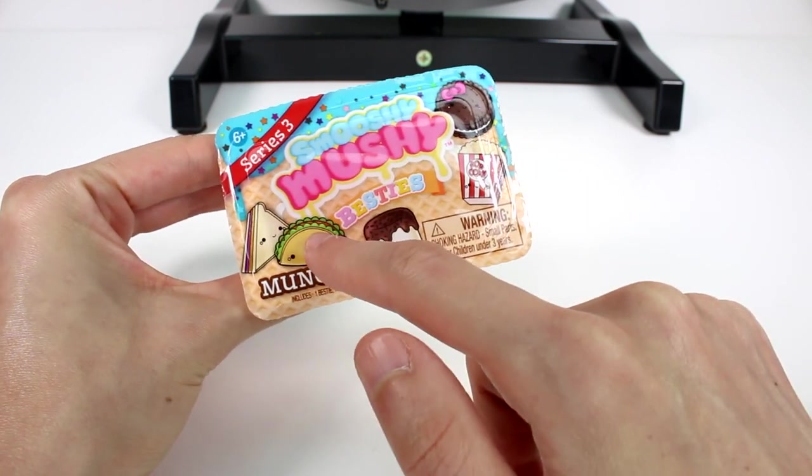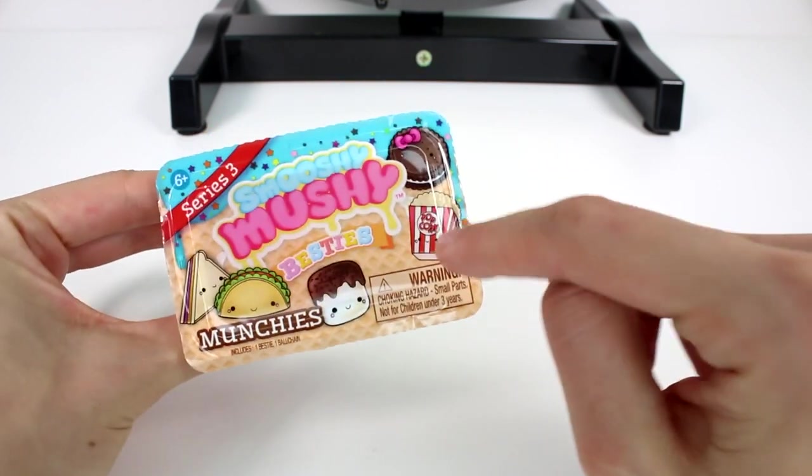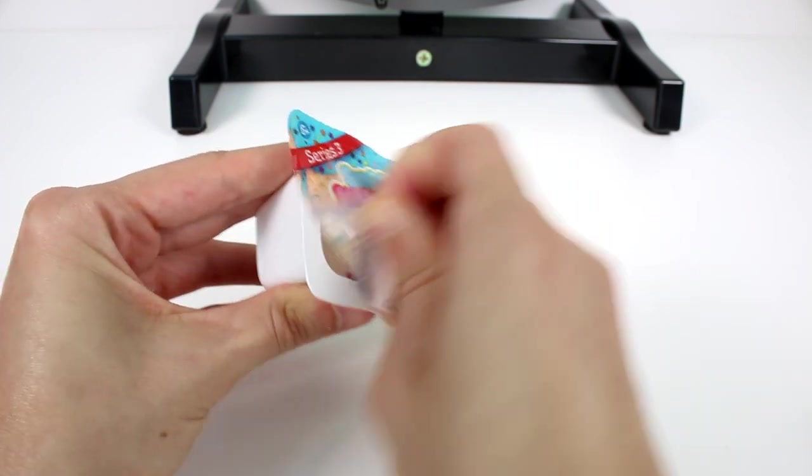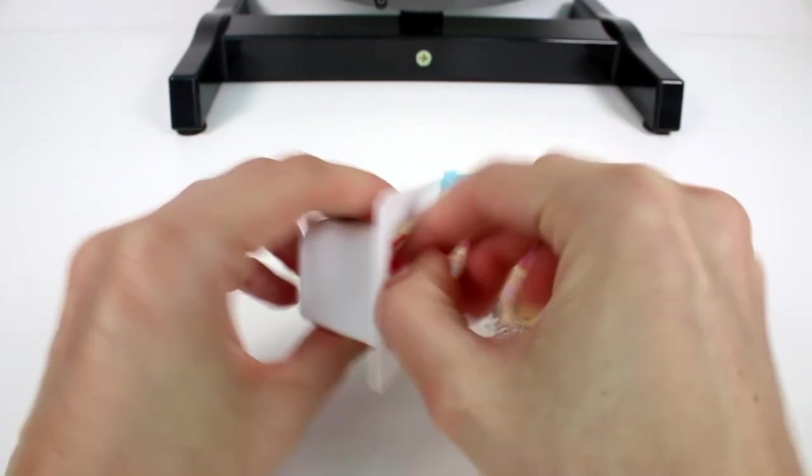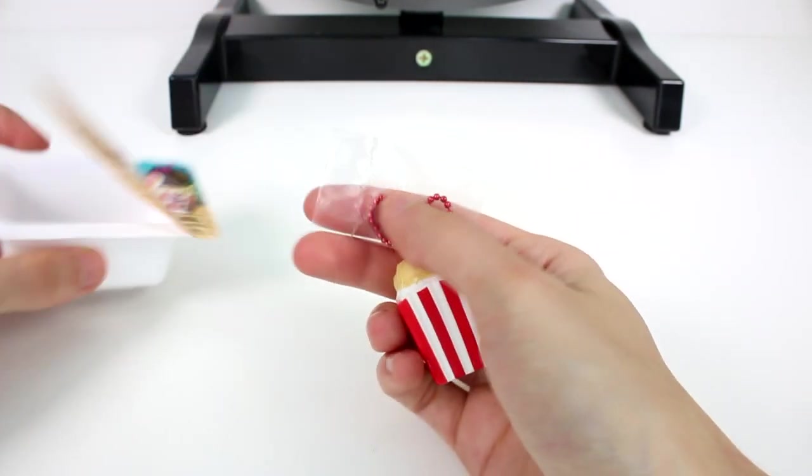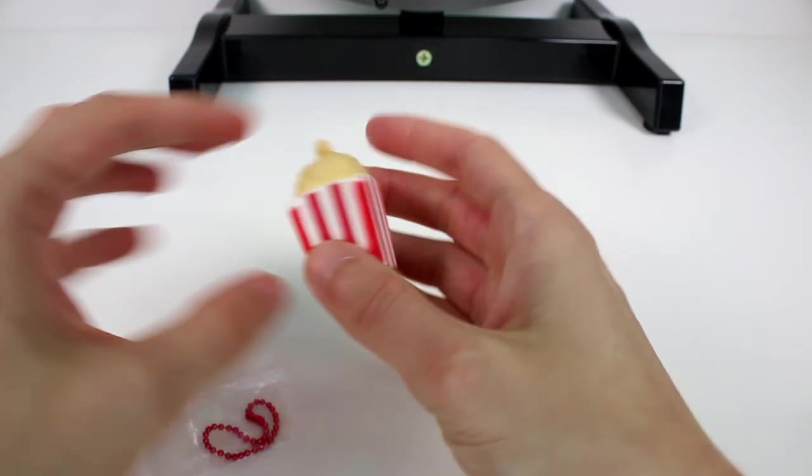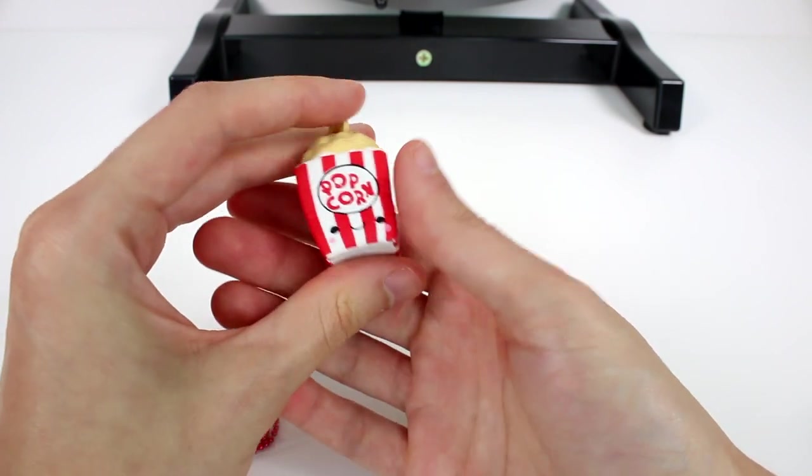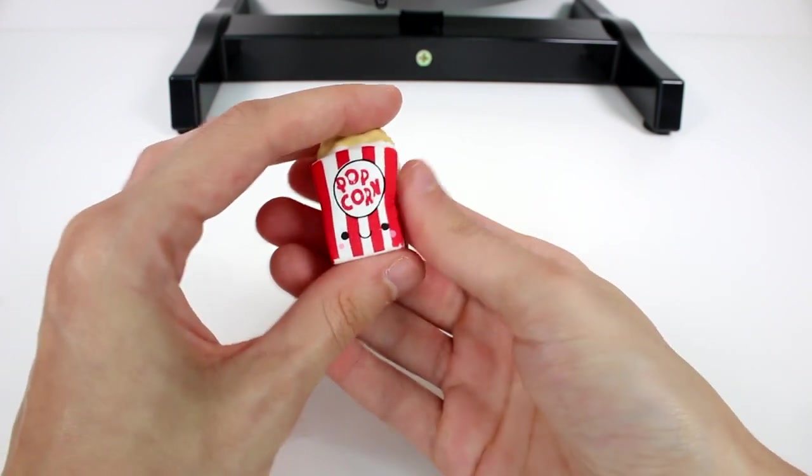First up we have the Smooshy Mushy Besties Munchies. We have a PB&J, a taco, a marshmallow covered in chocolate, popcorn, and a cookie on the front. Let's see who we're going to get. It's the popcorn. I love this one. It is definitely one of my top favorites, Smooshy Mushy Besties of all time.